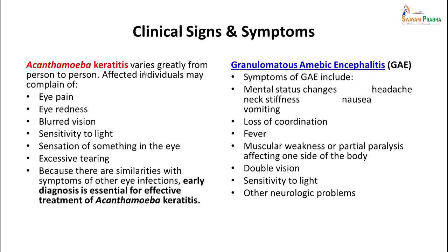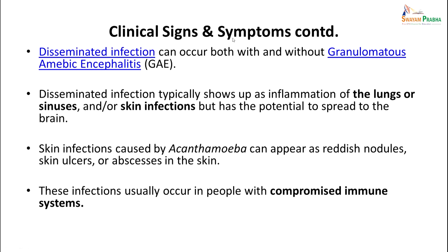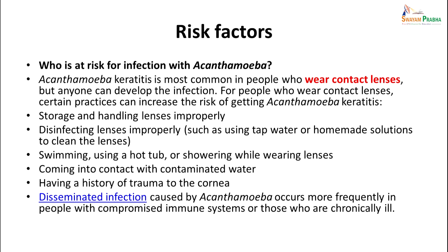Clinical signs and symptoms of Acanthamoeba keratitis vary greatly from person to person. Patients can have eye pain, redness, blurred vision, sensitivity to light, sensation of something in the eye, and excessive tearing. For granulomatous encephalitis, patients will have mental status changes, headache, neck stiffness, nausea and vomiting, loss of coordination, fever, muscular weakness or partial paralysis, double vision, sensitivity to light, and other neurological symptoms. Disseminated infection can occur with or without encephalitis, showing as inflammation of the lungs or sinuses, or skin infection appearing as reddish nodules, skin ulcers, or abscesses — most commonly in immunocompromised individuals.